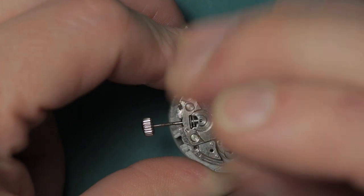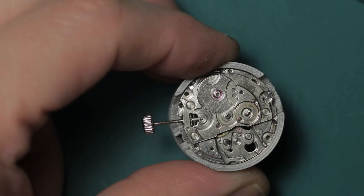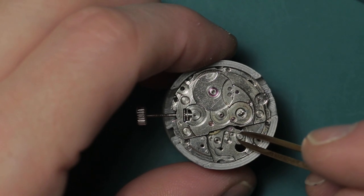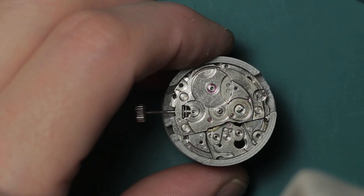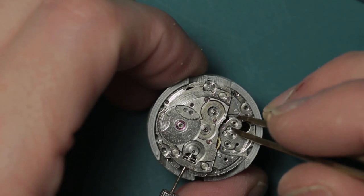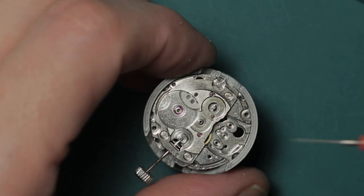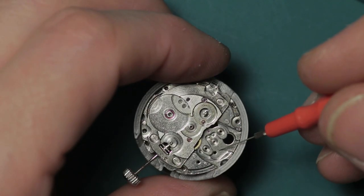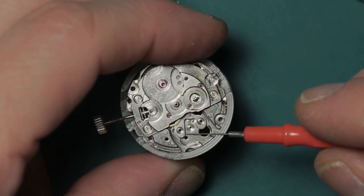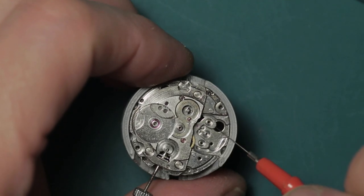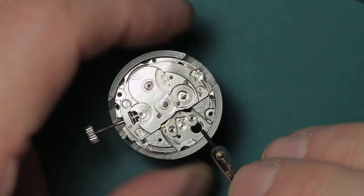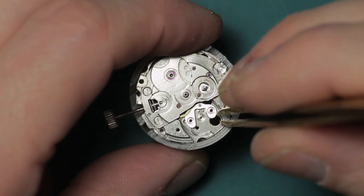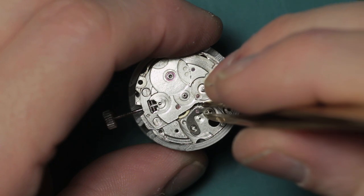Here I'm removing the pallet bridge, which is held by two screws, and the pallet fork. You can see here the pallet bridge is a little reluctant to move, but with a bit of encouragement from the tip of a screwdriver blade it does come free. Obviously care must be taken here not to break the fragile pivots of the pallet fork.